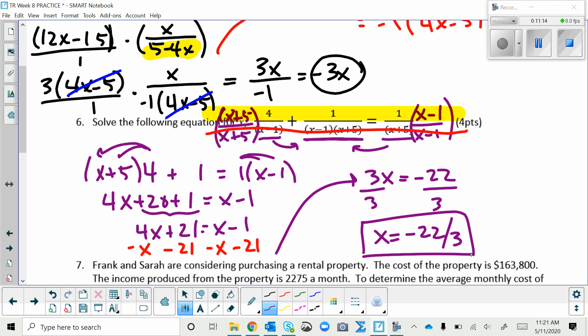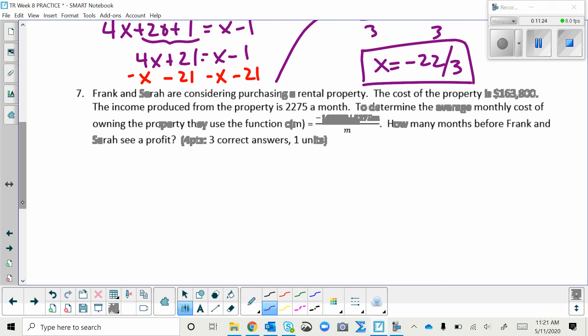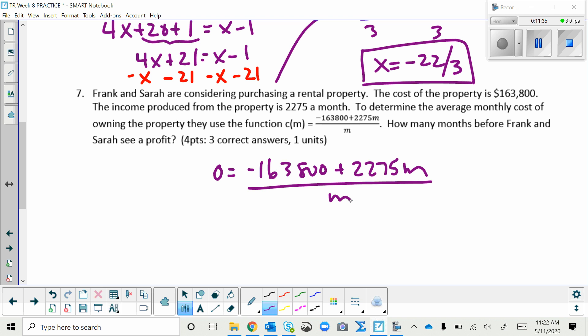And then the last problem gets set up just like the one from the notes. You're going to replace C of M with 0. Multiply both sides by M. They cancel here. And it equals 0 on the left.